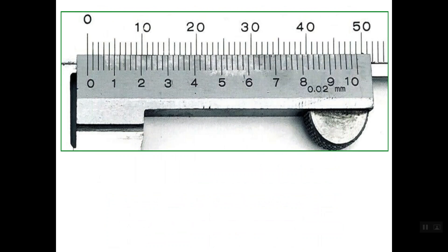The Vernier scale has 50 equal divisions and a length of 49 mm. Let's understand why: with 49 mm divided into 50 equal partitions, we get a least count of 0.02 mm. First, we need to understand how to get the least reading for this caliper. If you open the caliper so that the first line after the zero line on the Vernier scale lines up with line number one on the main scale, that gives us the least reading. The least count is simply the difference between two adjacent lines on the main scale and two adjacent lines on the Vernier scale.